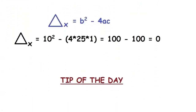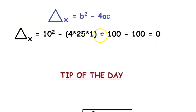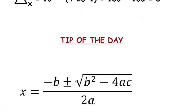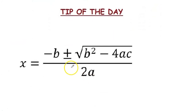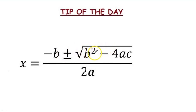Now for the tip of the day. For those wondering where the discriminant comes from, we look at the quadratic formula: x = (−b ± √(b² − 4ac)) / 2a. We use this formula to find the values of x in a quadratic equation. The part under the square root is the discriminant, and based on its value we can determine the number of solutions.